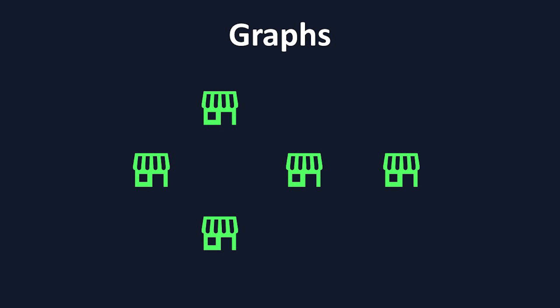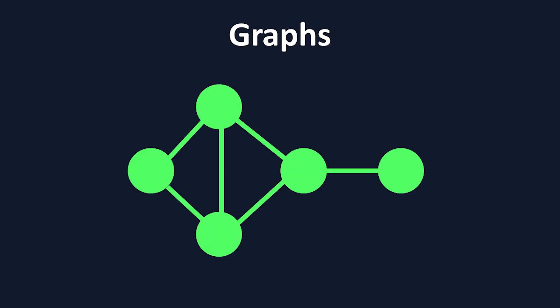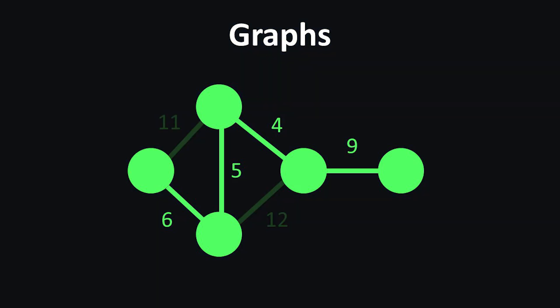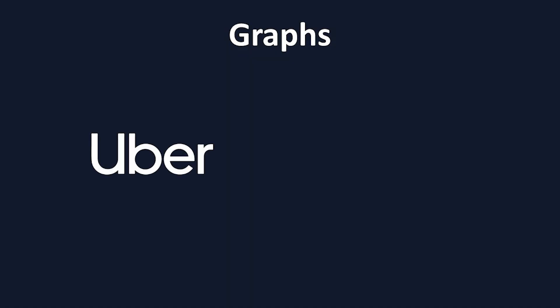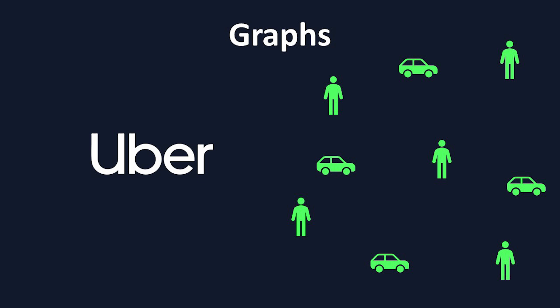Imagine you're running errands and you have five different stores to visit. We can represent this as a graph, where each store is a node and each edge has a distance. Using this data structure, we can develop an algorithm that allows us to calculate the shortest route between all five places. For a real life example, think of Uber — every Uber driver and user could be seen as nodes, and the application is constantly trying to optimize so that the waiting time for each rider is as short as possible. There are endless applications to graphs, which is why it's such an important data structure to understand.